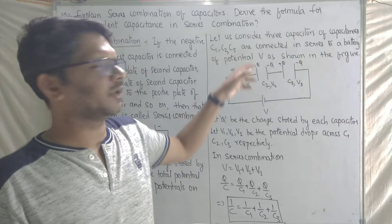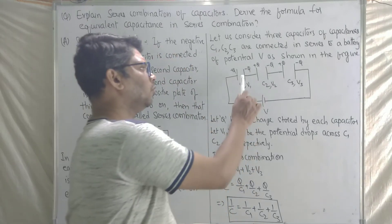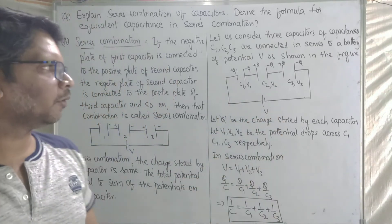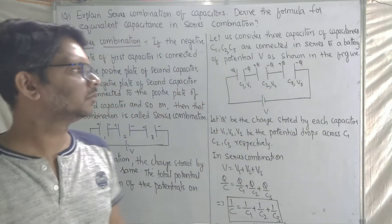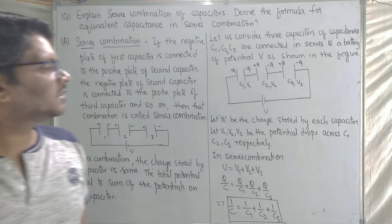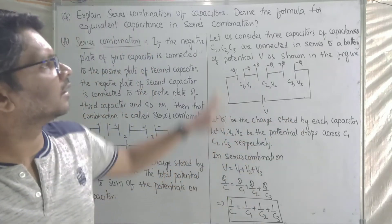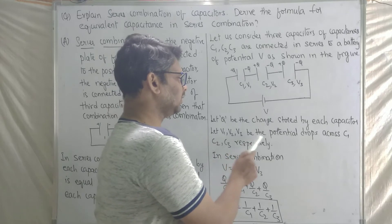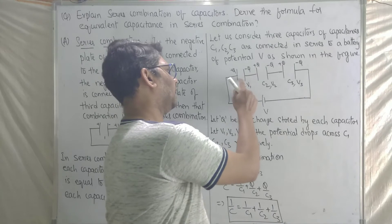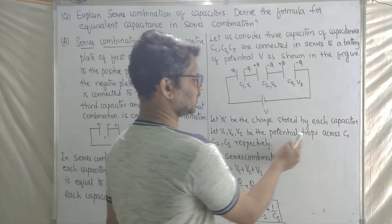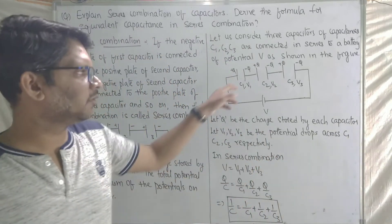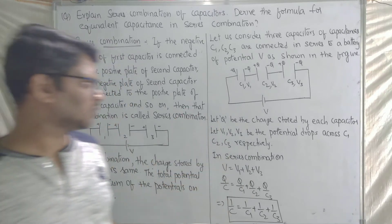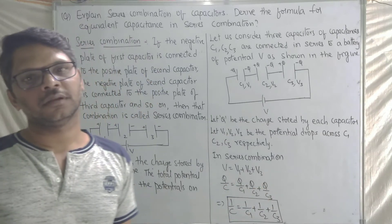Let us consider three capacitors of capacitances C1, C2, C3 connected in series to a battery of potential V. The charge stored by each capacitor is Q. The potential drops across C1, C2, C3 are V1, V2, V3 respectively. In series combination, the total potential difference is: V = V1 + V2 + V3.